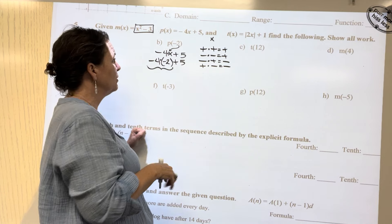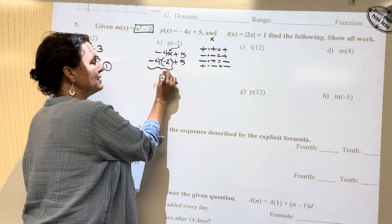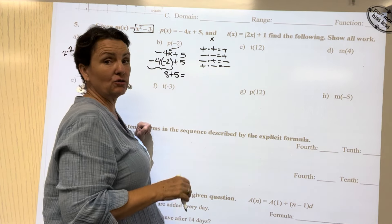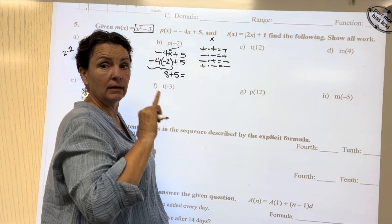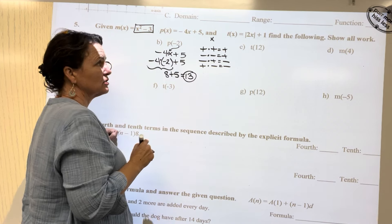We have a negative times a negative, which is a positive. And four times two is eight. Eight plus five more. Eight. If you've got to use your fingers and toes, do it. Eight, nine, ten, eleven, twelve, thirteen. Got it. We've got a final answer, thirteen.